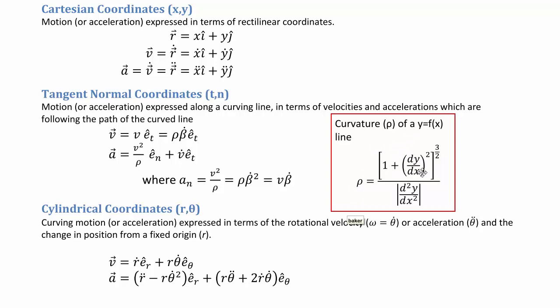Note that these are dy/dx derivatives of the function with respect to x: a single derivative in the numerator and the second derivative in the denominator. The second derivative in the denominator is an absolute value, so if it came out negative, change it to positive. Because you end up squaring the first derivative in the numerator, both are instantaneous values at location x.